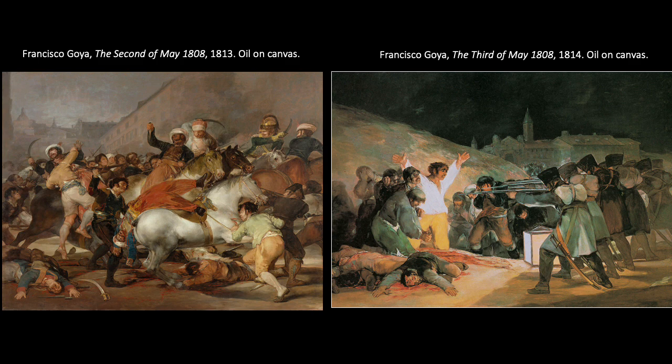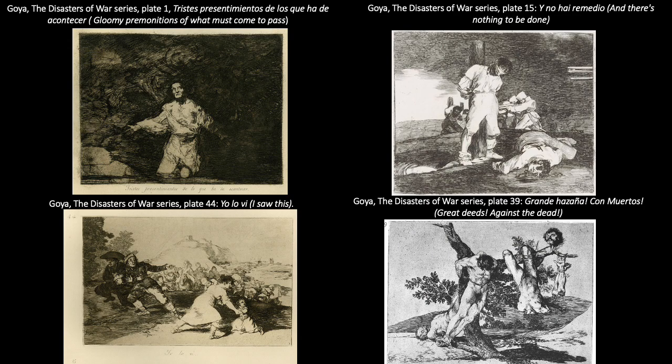In his Disasters of War series, Goya documented the horrors of the Spanish War of Independence, also known as the Peninsular War of 1808 to 1814 between Spain and France. One of the bloodiest events in Spain's modern history, with some 215,000 to 375,000 Spanish military personnel and civilians dying during the war. The series consists of about 82 aquatint etchings exploring the effects of war, including carnage, conflict, famine, heroism, and retribution.